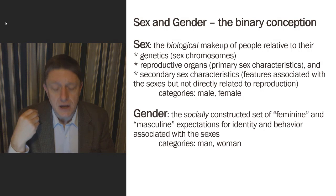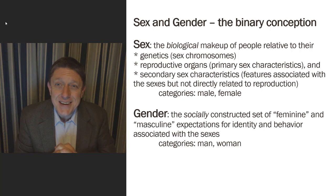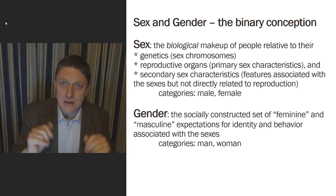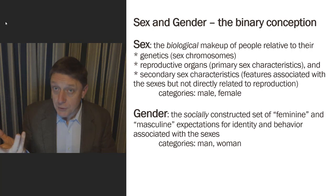One is a sex binary and another is a gender binary, and they are not the same thing. In this binary conception — the simplest conception of gender — there are two sexes and two genders. But when we start to take a closer look, we'll see that there are hints already, even in this binary conception, of something other than binary. For instance, when we look at sex, sex is supposed to be the biological makeup of people relative to reproduction.